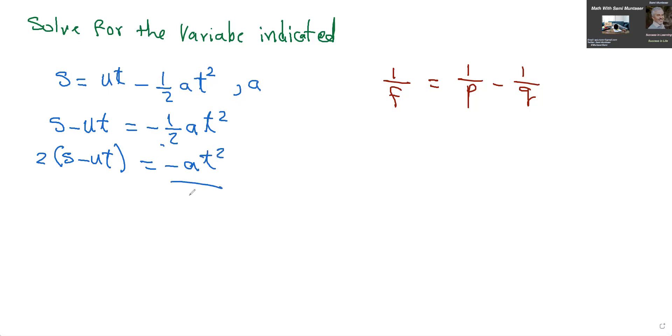To solve for A now, just divide both sides by negative T squared. And there's lots of ways to do this, by the way, but this is the way I'll do it. Negative over T squared. So the negative cancels the negative, the T squared cancels the T squared. Usually we don't like a negative on the bottom, so I'm just going to throw the negative in front of the two there. So we have negative 2S minus UT over T squared, and that's what A equals.